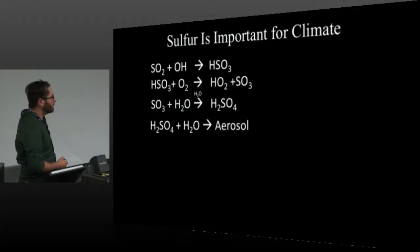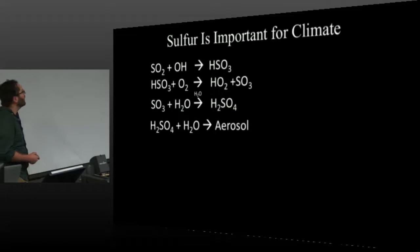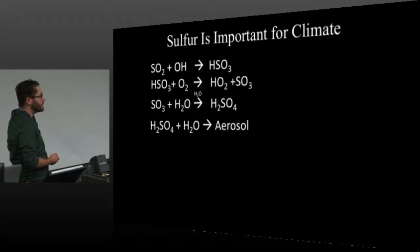Sulfur is really important for climate and for understanding the temperature of our planet, the energy budget. The reason for this is in any sort of oxidizing atmosphere, most of the sulfur that gets released ends up as sulfur dioxide. Then through reactions with OH radicals goes on to form HSO3. Ultimately, you end up with SO3, and through a water-catalyzed reaction, you get sulfuric acid. Sulfuric acid is really important because it's this hygroscopic molecule. It likes to take up water and form aerosol, which is in this case an aqueous droplet suspended in the air.